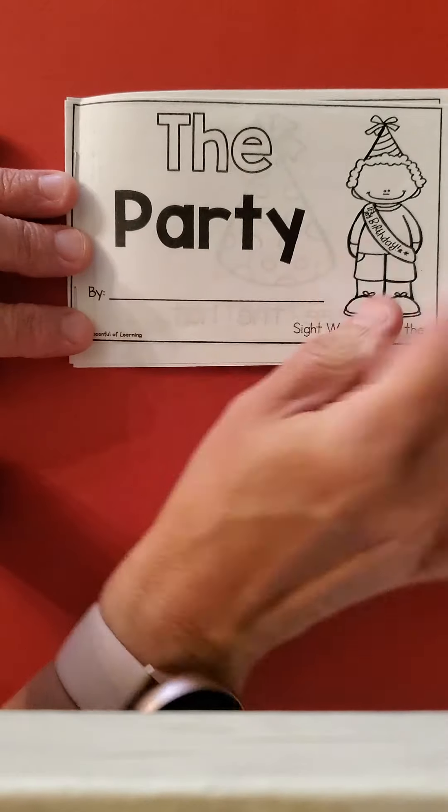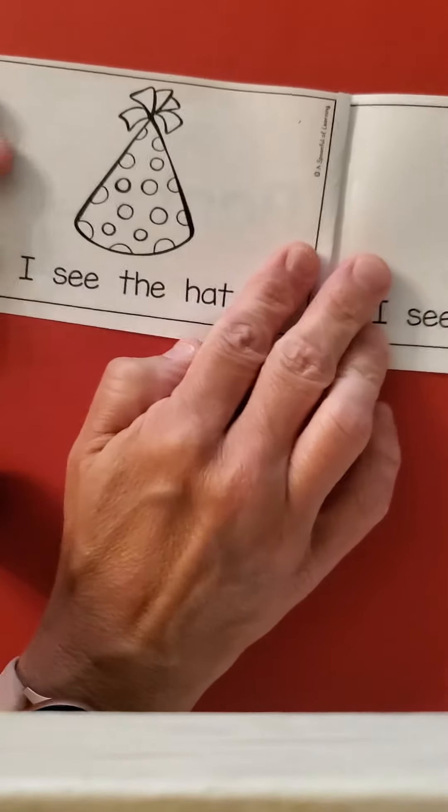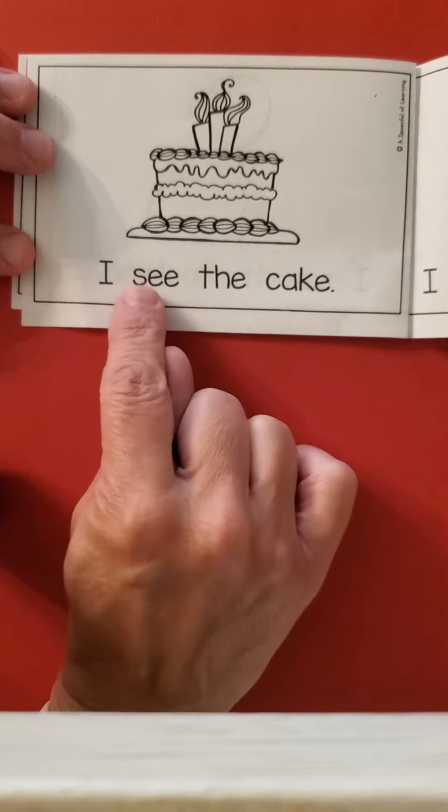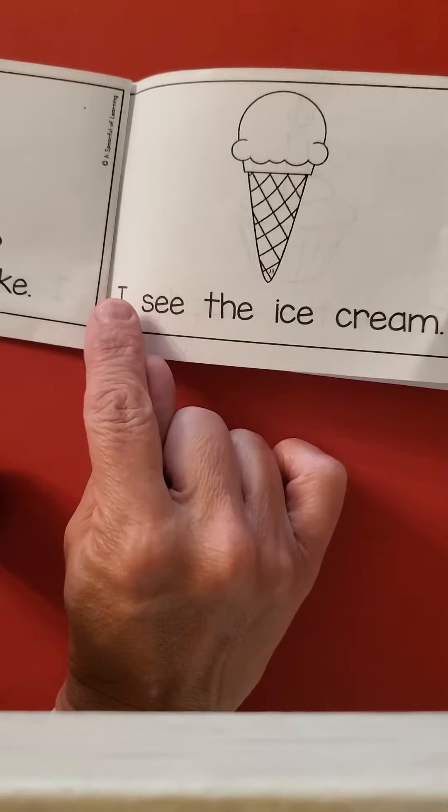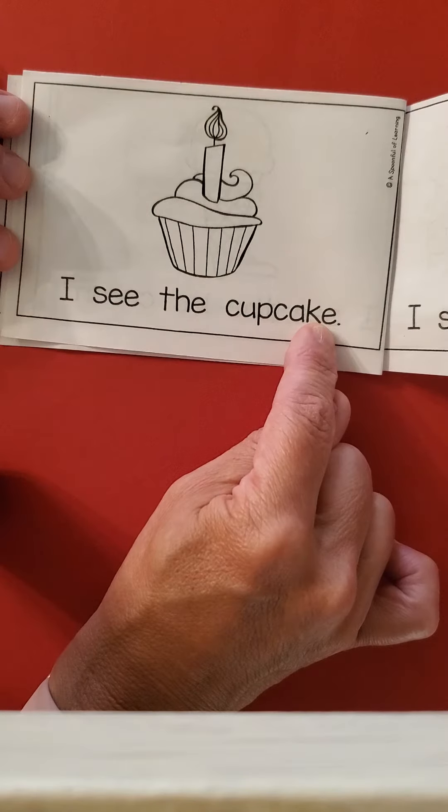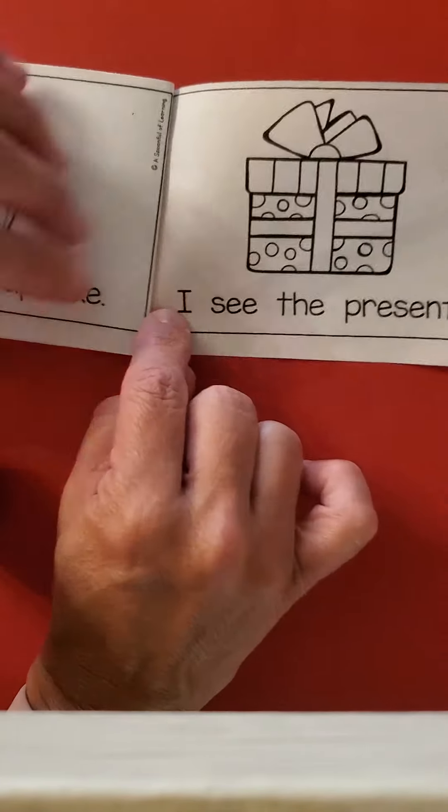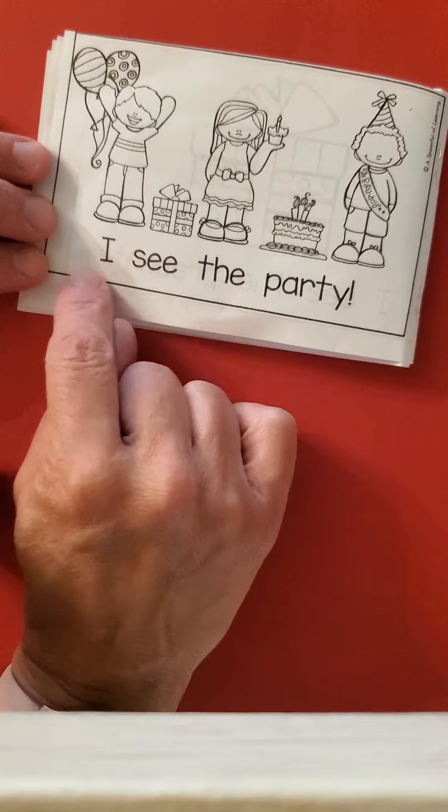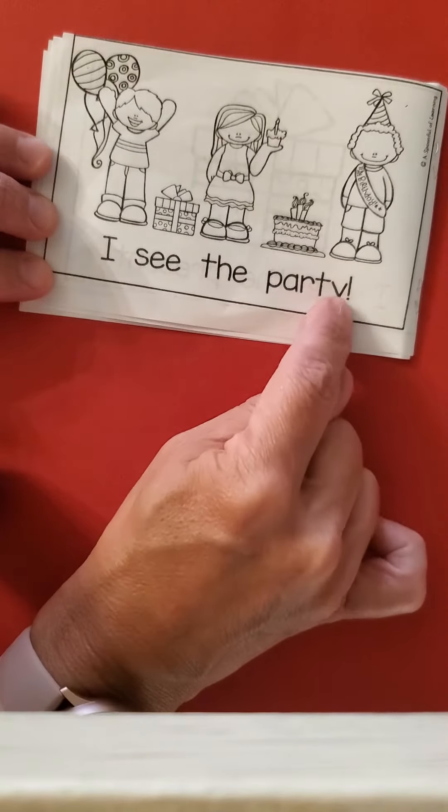The Party. I see the hat. I see the ball— a balloon, sorry. It's not a ball, it's a balloon. I see the cake. I see the ice cream. I see the cupcake. I see the present. I see the party! Remember the exclamation point.